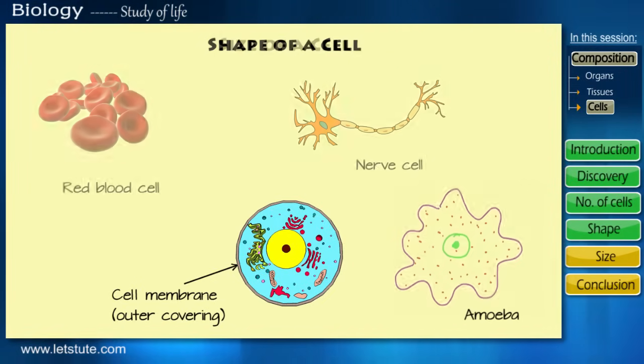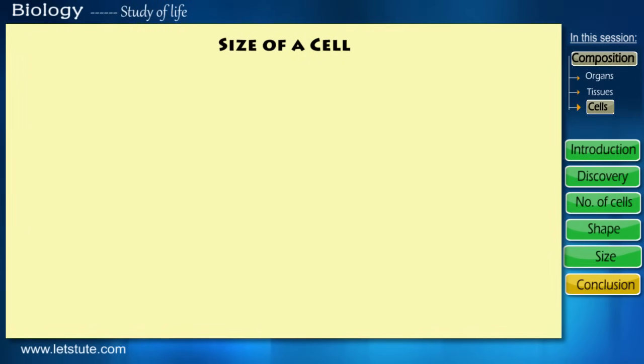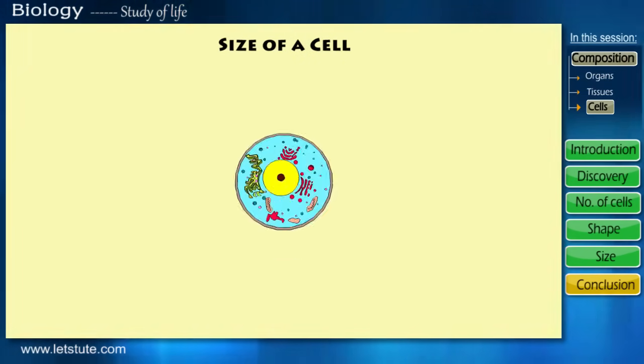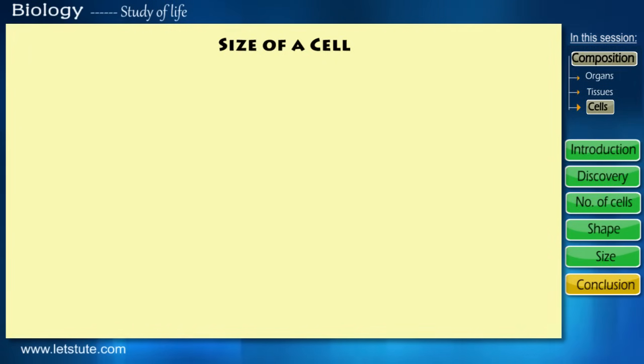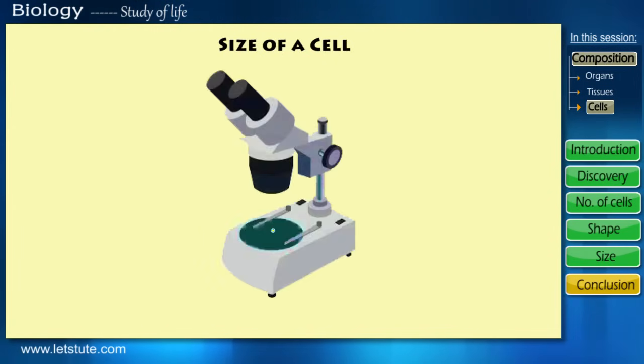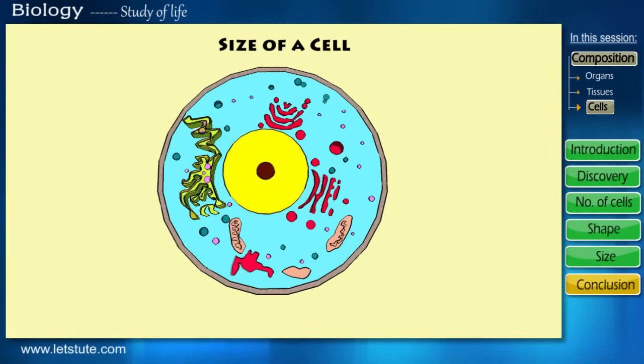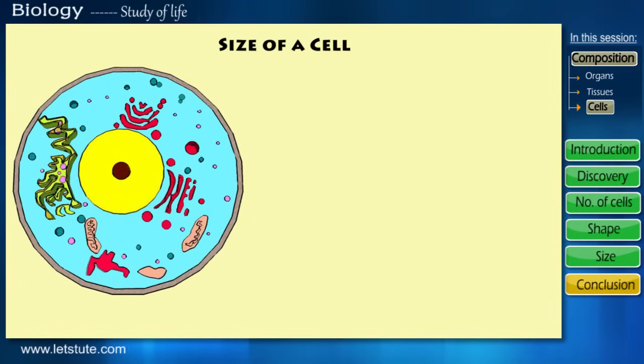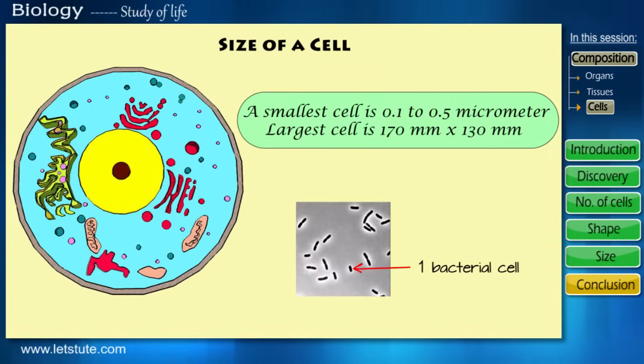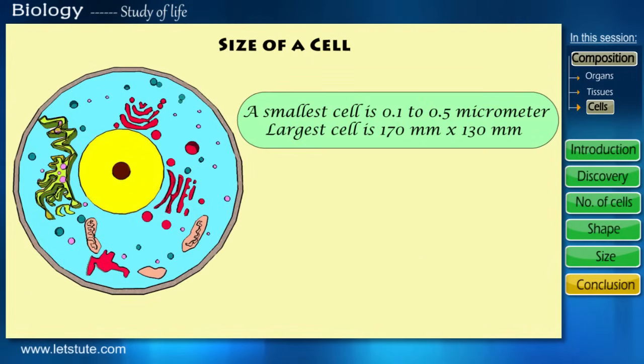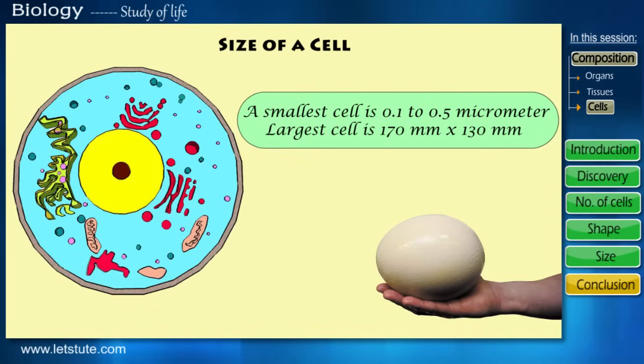Coming to size of a cell, cells are very tiny in size and are not visible to the eye. Hence to view them we use a microscope, which is an instrument that magnifies and enlarges the image of a cell. Did you know that the smallest cell is 0.1 to 0.5 micrometer, which is a bacteria, while the largest cell is 170 millimeter into 130 millimeter in size, and it's an egg of an ostrich?